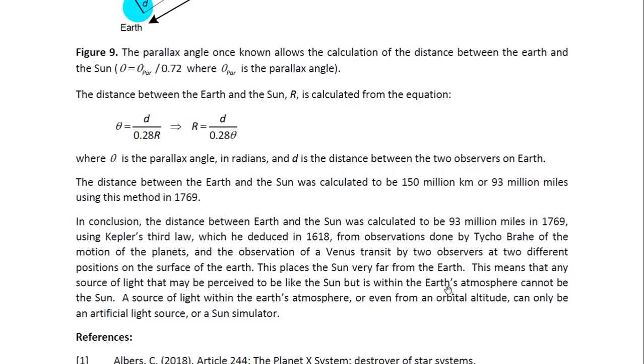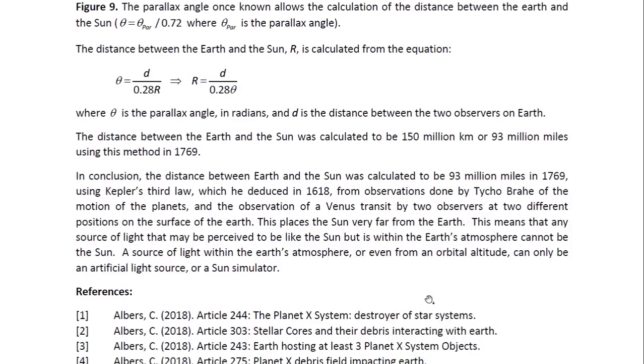So in conclusion, the distance between Earth and the sun was calculated to be 93 million miles in 1769, using Kepler's third law, which he deduced in 1618, from observations done by Tycho Brahe of the motion of the planets. And the observation of a Venus transit by two observers at two different positions on the surface of the Earth. This places the sun very far from the Earth. This means that any source of light that may be perceived to be like the sun, but is within the Earth's atmosphere, cannot be the sun. A source of light within the Earth's atmosphere, even from an orbital altitude, can only be an artificial light source, or a sun simulator.